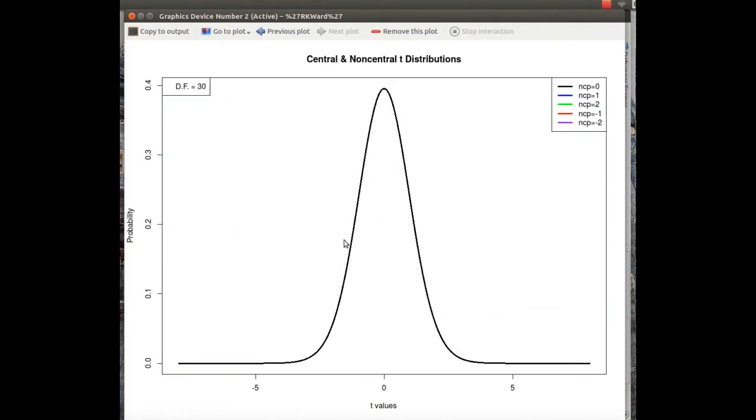So this is the central t distribution, just sometimes called the t distribution, and it's equivalent to, say, the non-centrality parameter zero. And if you were to conduct a t-test, then you would find critical regions here in the tails.